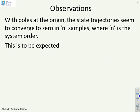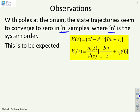With poles at the origin the state trajectories seem to converge to zero in n samples where n is the system order. This is what you expect because if you do a basic bit of algebra you'll find that the z-transform for the states x of z is given by this expression here.